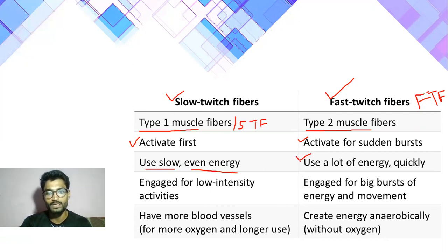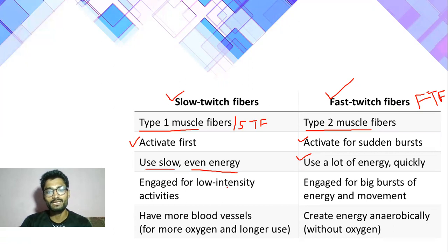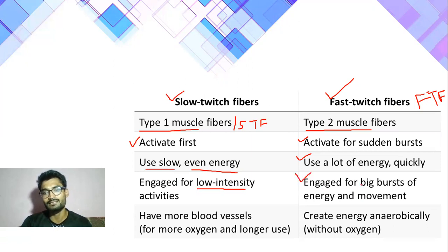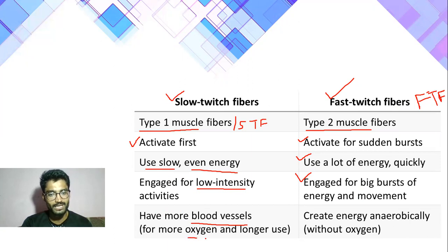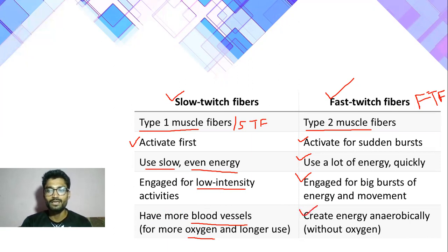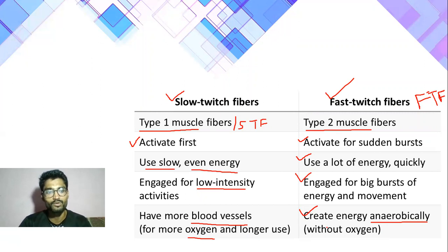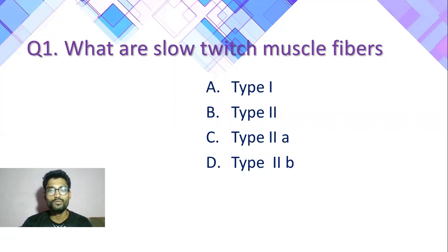Type 2 uses a lot of energy quickly for sudden high-intensity activity — जैसे 100 meter की sprint या snatch weight lifting। इसमें intensity बहुत ज्यादा रहती है — highest intensity से काम होता है। Type 1 में ज्यादा blood vessels पाए जाते हैं। Type 1 में ज्यादा mitochondria भी पाए जाते हैं।